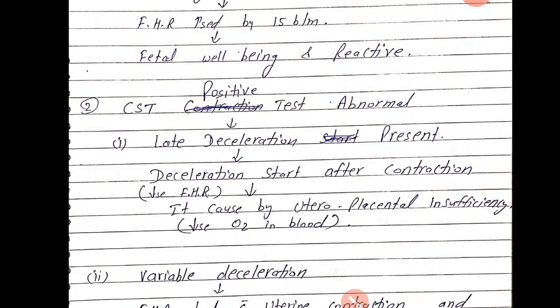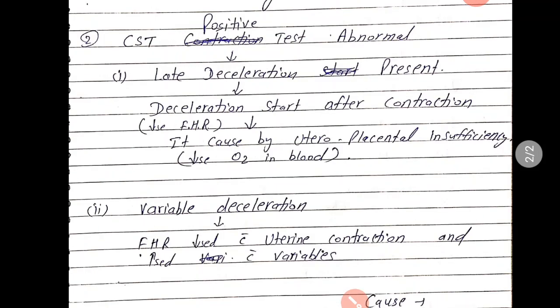In CST positive (abnormal) result, there are two conditions: late deceleration and variable deceleration. In late deceleration, after a contraction starts, the fetal heart rate begins to decrease. This is caused by uteroplacental insufficiency, meaning the placenta is not supplying enough oxygen to the fetus.